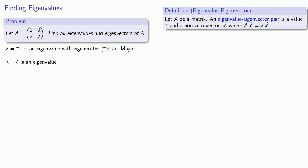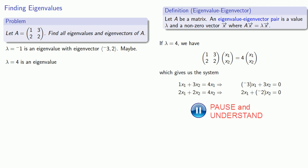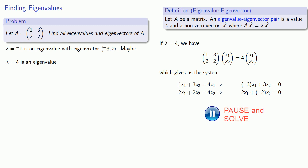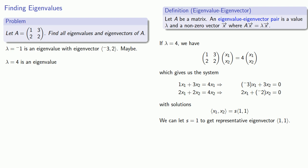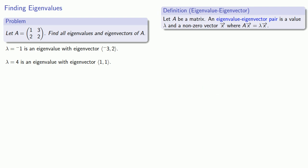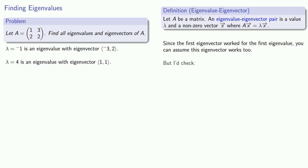What about our eigenvalue lambda equals 4? For lambda equals 4, we want matrix A applied to the eigenvector to equal 4 times the eigenvector. That gives us the system: negative 3x1 plus 3x2 equals 0, and 2x1 minus 2x2 equals 0. Taking the coefficient matrix and row reducing, we get parameterized solutions in vector form: (x1, x2) equals s times (1, 1). Setting s equal to 1 gives our representative eigenvector (1, 1). Since the first eigenvector worked for the first eigenvalue, you might assume this one works too — but check it anyway.